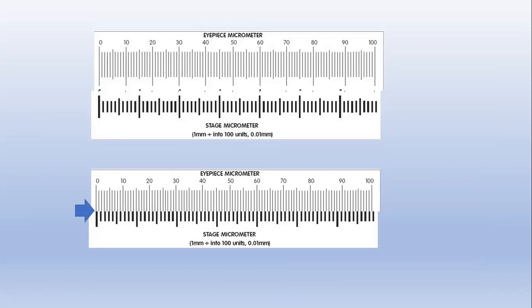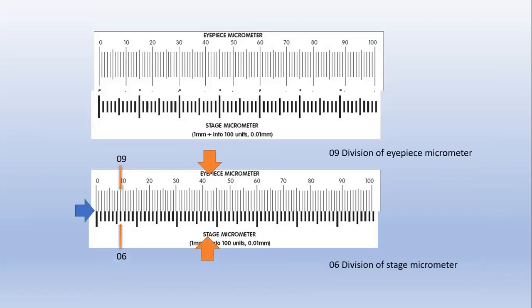Counting: one, two, three, four, five, six, seven, eight, nine. The ninth line of the eyepiece micrometer coincides with the sixth line of the stage micrometer. The divisions are different — nine on the eyepiece and six on the stage micrometer — but the distance is the same, as shown by the black line. The distance from zero to the ninth eyepiece line equals the distance from zero to the sixth stage micrometer line.